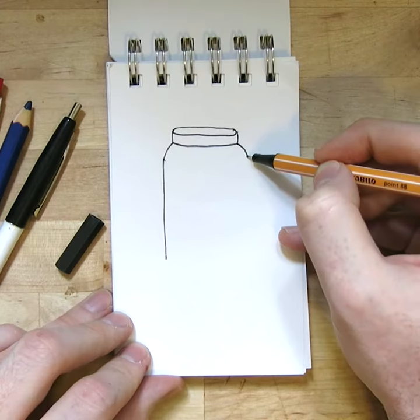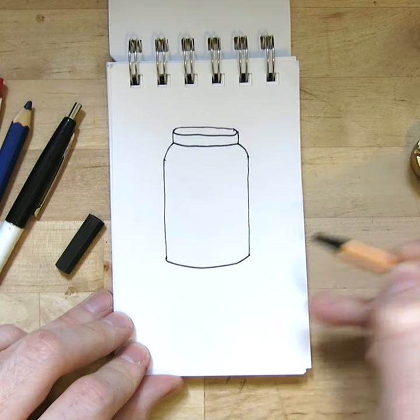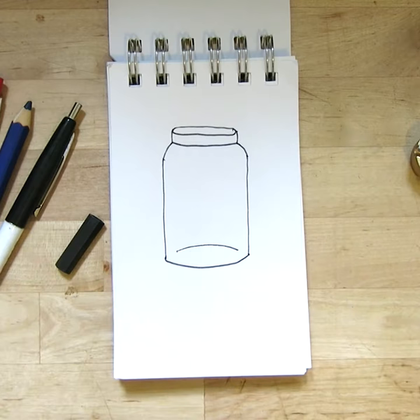Put one semicircle there and another one inside to see the bottom of the jar. And now you can put anything you want inside of the jar.